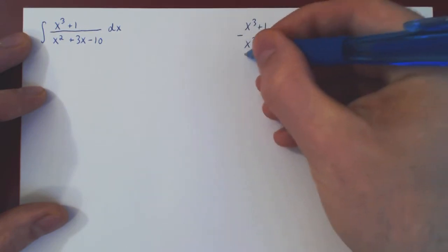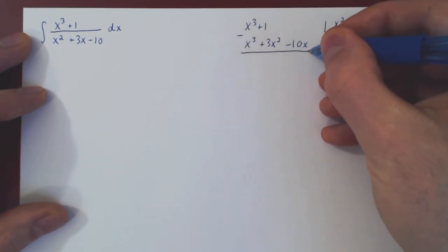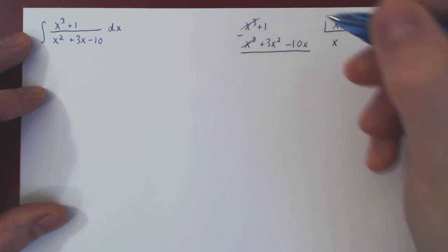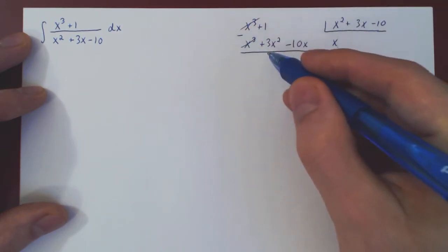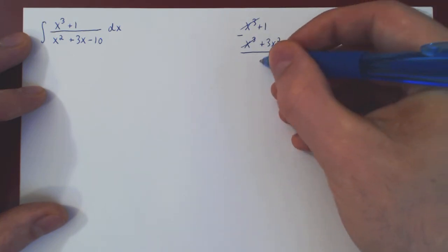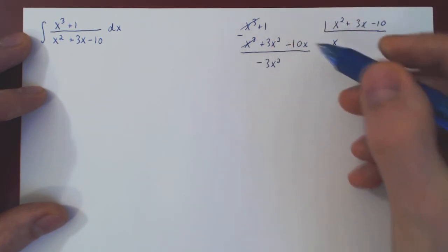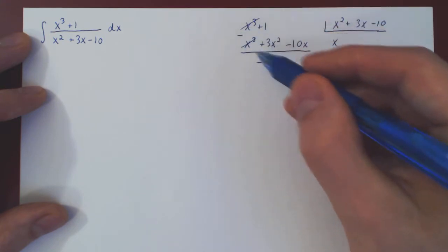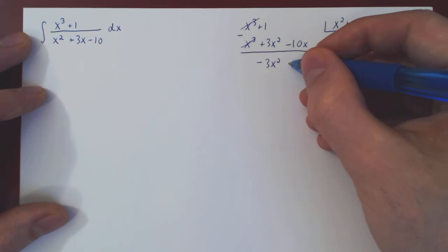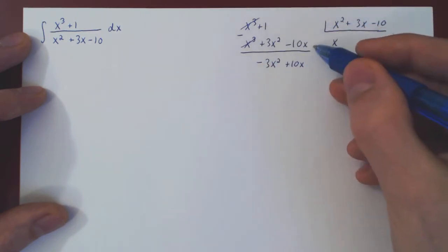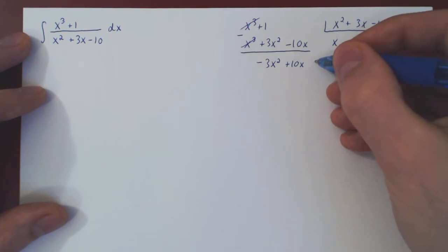We subtract. x cubed minus x cubed cancels. Then we have no x squared, so 0 minus 3x squared, negative 3x squared. There is no multiple of x, so 0 minus negative 10x is positive 10x. And 1 minus 0 is plus 1.